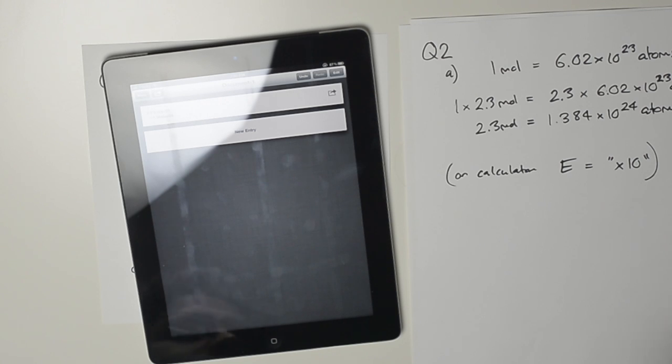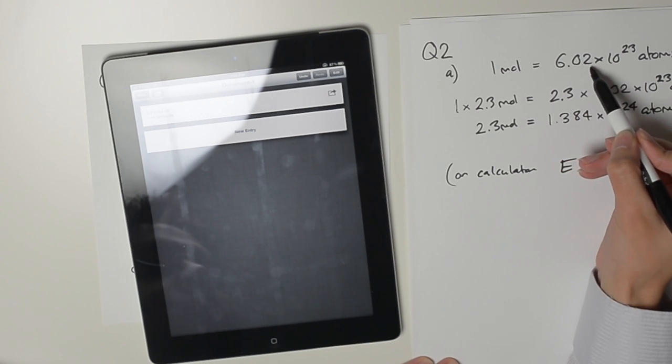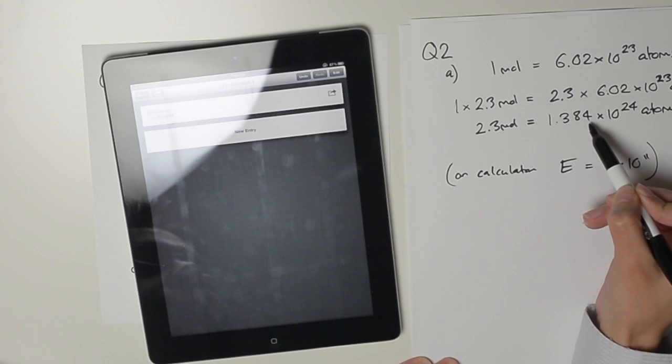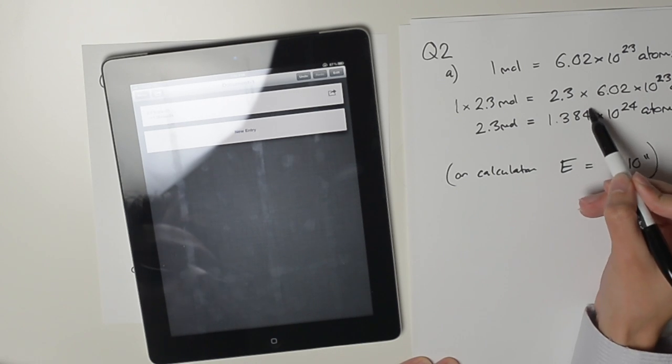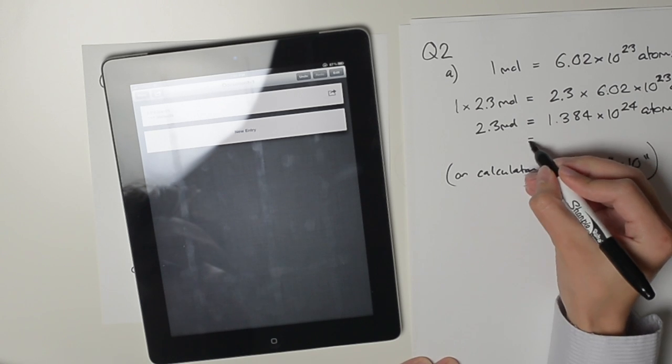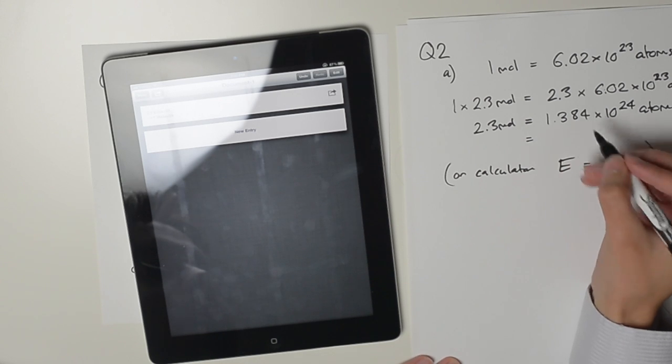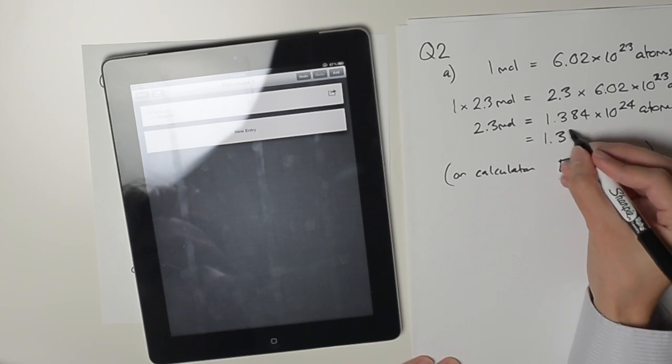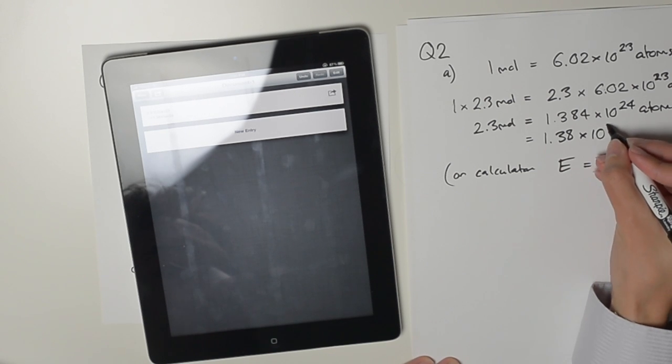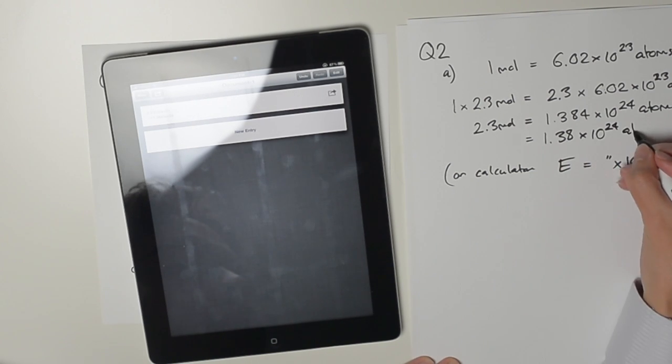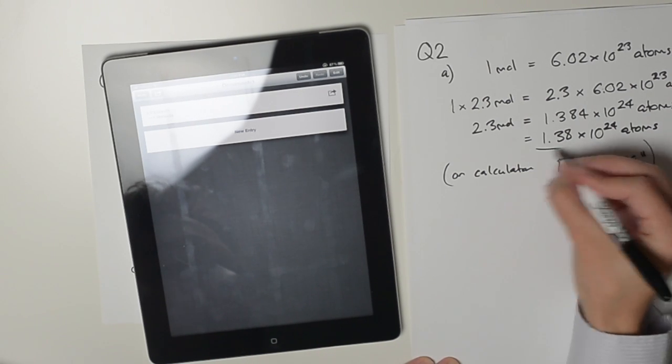If you started with 3 significant figures, you have to finish with 3 significant figures, so I've got to round this 4. Since 4 is less than 5, it won't make a difference to the neighboring 8. So it's 1.38 times 10 to the power of 24 atoms. Done.